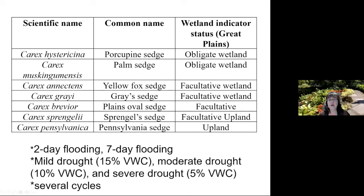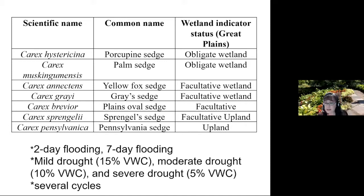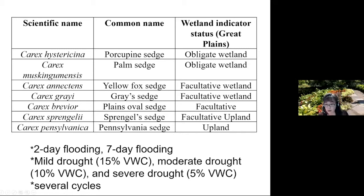For Randy's project, we first worked on native sedges. We looked at their wetland status. We worked with porcupine sedge and palm sedge, which are obligate wetland plants — you would always find them in a wetland. At the bottom of the table, Pennsylvania sedge would only occur in an upland situation. In between are plants in intermediate status: facultative wetland plants are more likely to occur in a wetland but tolerate drier soils, while facultative plants are equally likely in saturated or dry conditions.